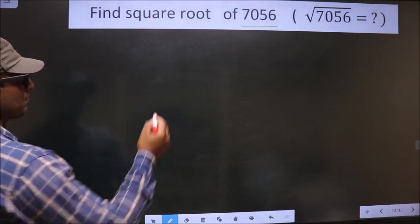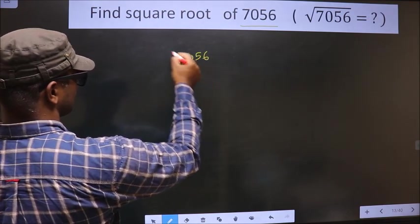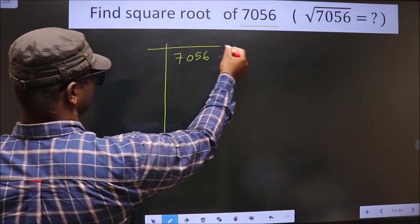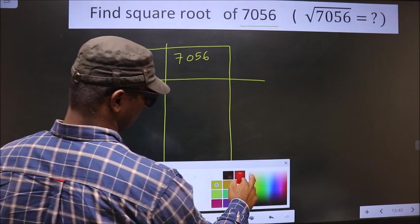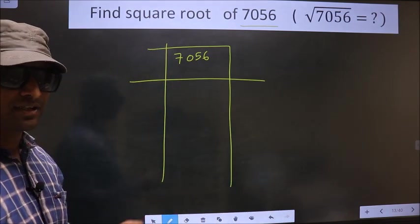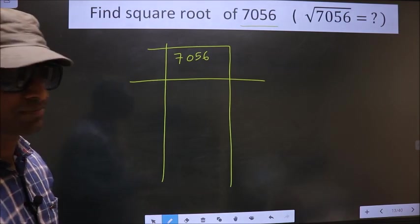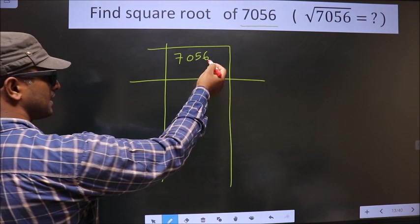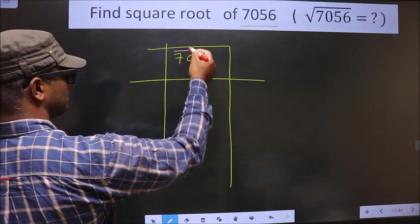That is 7056. Next, we should divide the given number into pairs, starting from this side. These two numbers one pair and these two numbers one pair.